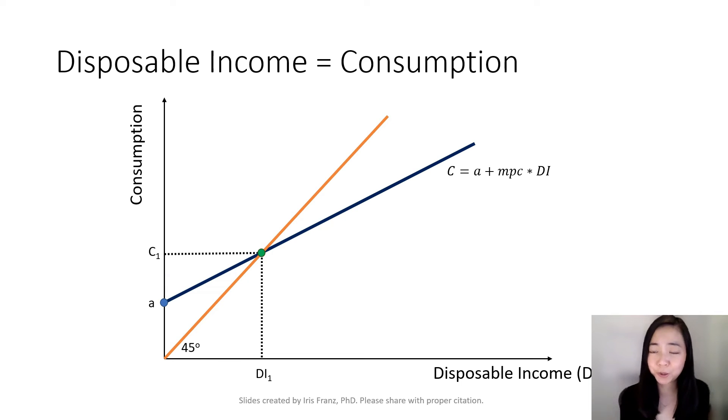Now we're going to put the 45-degree line together with our consumption schedule. At the intersection, you can see it's here. That means on this point, your disposable income is exactly equal to your consumption.